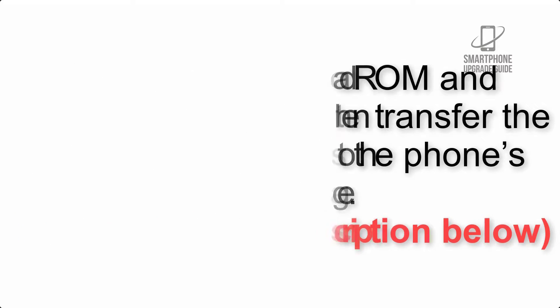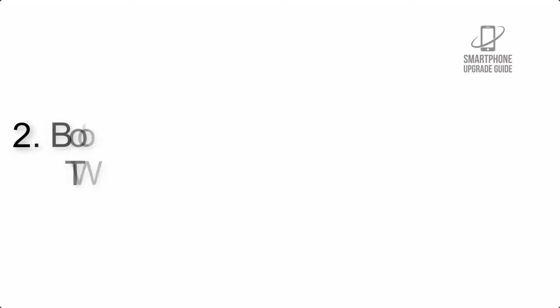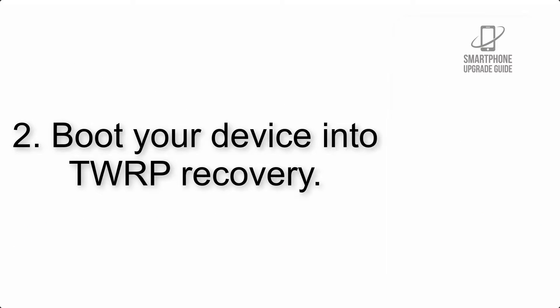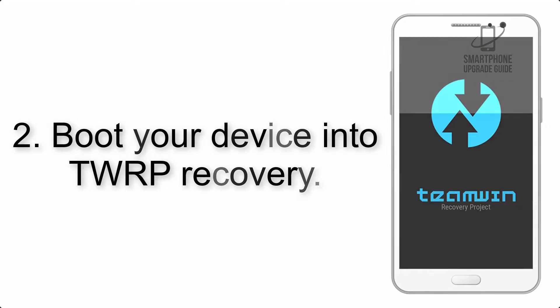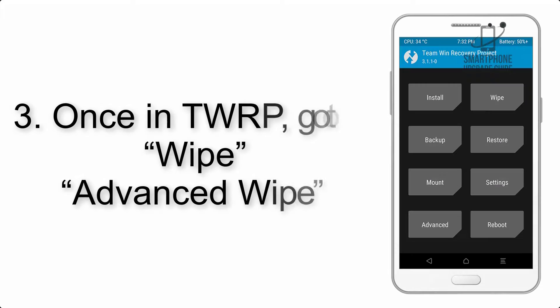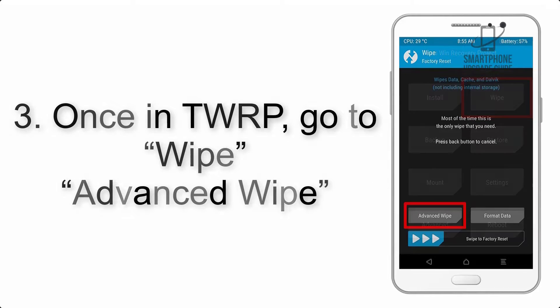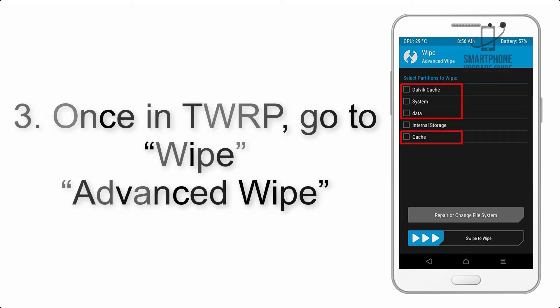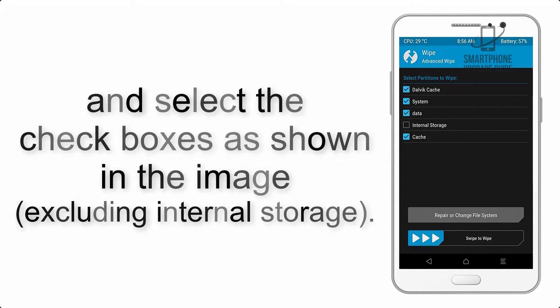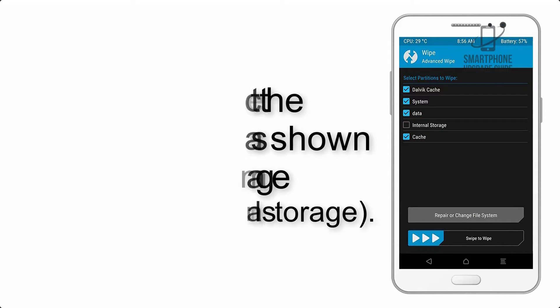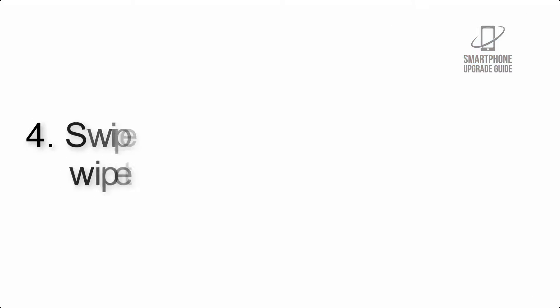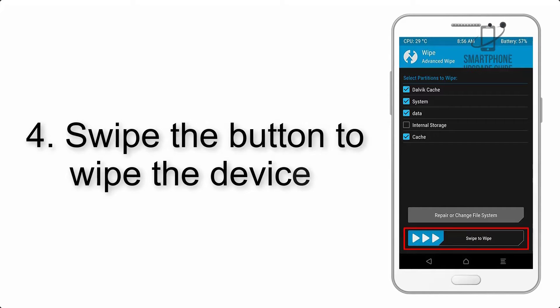Step 2: Boot your device into TWRP recovery. Once in TWRP, click on Wipe, then Advanced Wipe, and select the checkboxes as shown in the image, excluding internal storage.